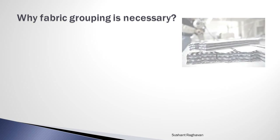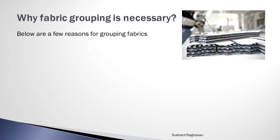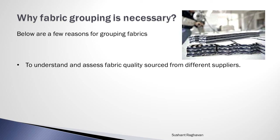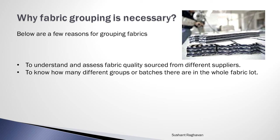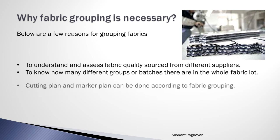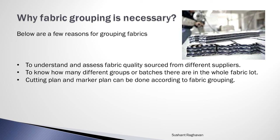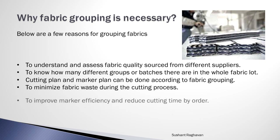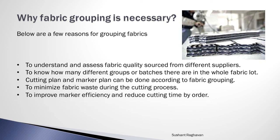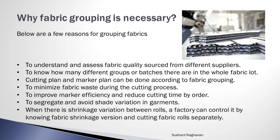Why is fabric grouping necessary? Below are a few reasons for grouping fabrics: to understand and assess fabric quality sourced from different suppliers; to know how many different groups or batches there are in the whole fabric lot; cutting plan and marker plan can be done according to fabric grouping; to minimize fabric waste during the cutting process; to improve marker efficiency and reduce cutting time; to segregate and avoid shade variation in garments. When there is shrinkage variation between rolls, a factory can control it by knowing fabric shrinkage variation and cutting fabric rolls separately.